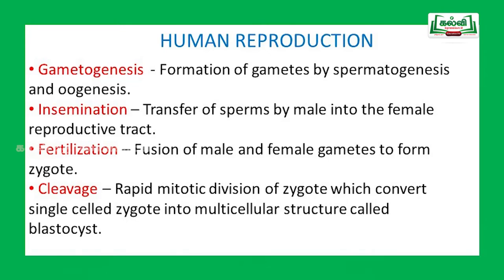Now we will move on to the topic of reproductive events in human beings. There are certain events that sequentially take place in human reproduction. They are: gametogenesis — the formation of gametes by spermatogenesis and oogenesis; insemination — the transfer of sperms by the male into the female reproductive tract; and fertilization — the fusion of male and female gametes to form a single-celled structure called a zygote.